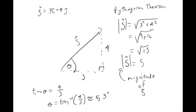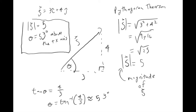Another thing we can use this triangle for is to find the angle theta. We use our trig functions — we have the opposite and adjacent side, so we use tangent. Tangent of theta equals opposite over adjacent, so solving for theta, we get theta equals the tangent inverse of 4 over 3. If you plug that into your calculator, you'll get about 53 degrees. So we can say this vector has a magnitude of 5 and an angle of 53 degrees above the positive x-axis. There will be problems where you're given a magnitude and angle to break into components, or given components to find the magnitude and angle.